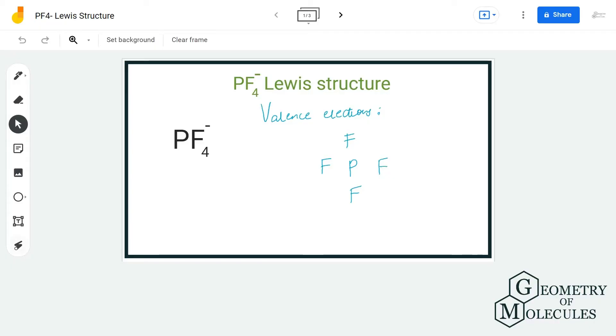Hi guys, welcome back to our channel. In today's video we are going to help you with PF4 minus Lewis structure. It has a negative charge over here because it is accepting an additional electron, and to determine its Lewis structure we shall start with valence electrons first.